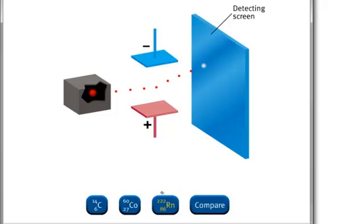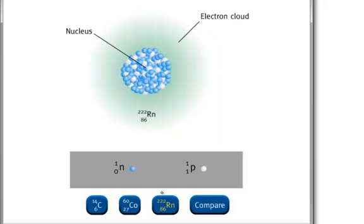Radon spontaneously emits alpha particles from its nuclei. Since alpha particles are attracted to the negative plate of an applied electrical field, they must be positively charged.